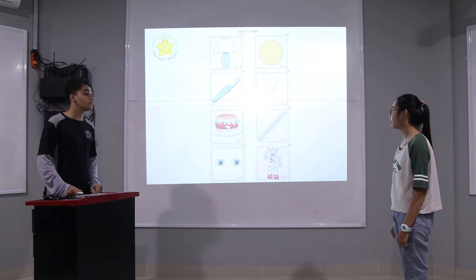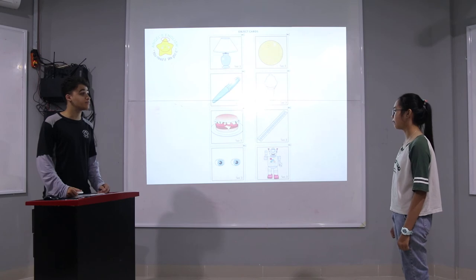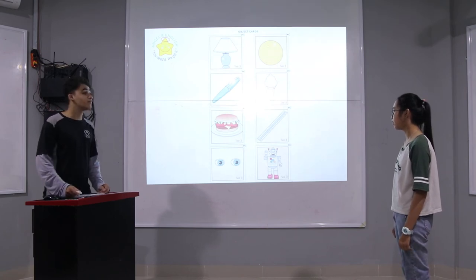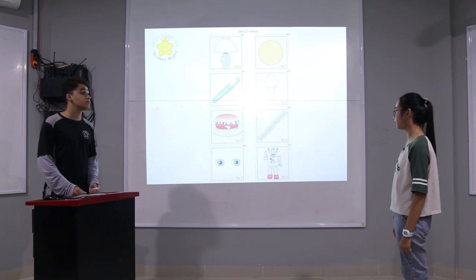What is it? It's a ruler. How many rulers do you have? I have two rulers. And what are they? They are eyes. What color are the eyes? They are blue.